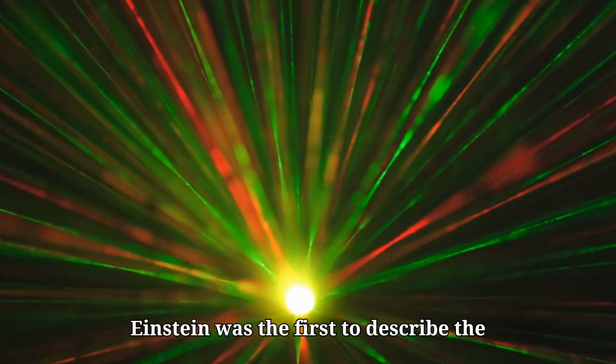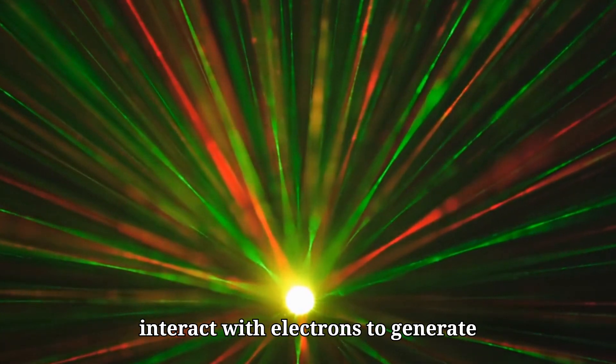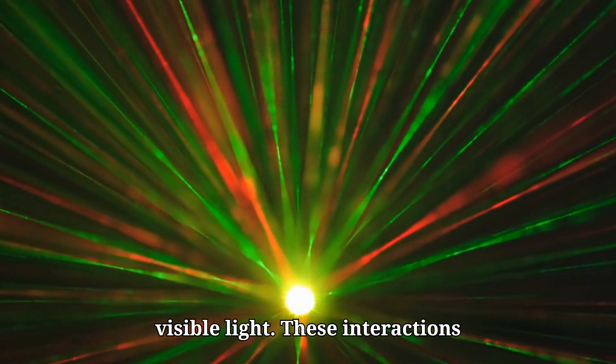Albert Einstein was the first to describe the nature of light, believing it to be composed of individual photons that interact with electrons to generate visible light.